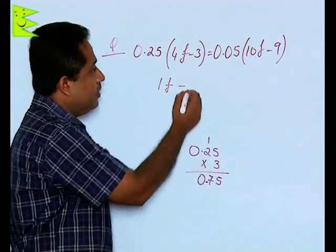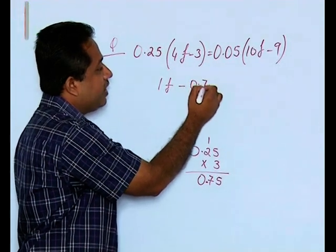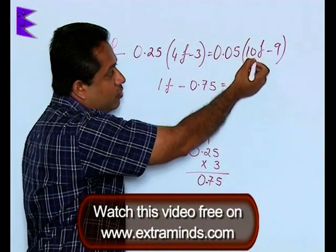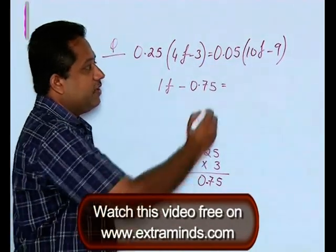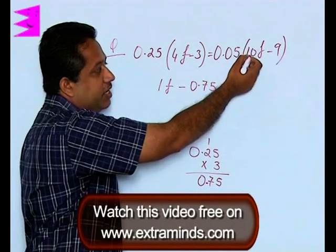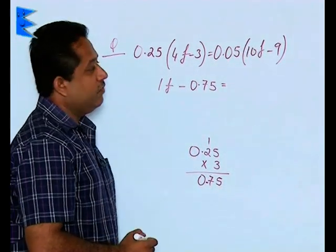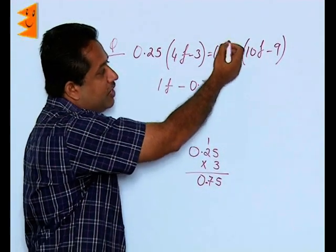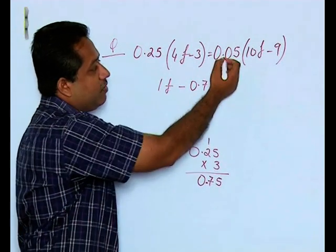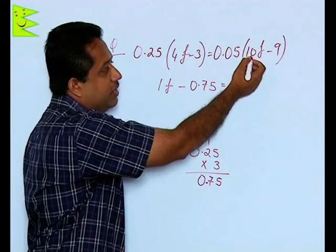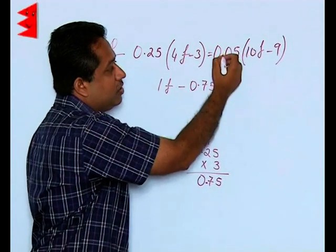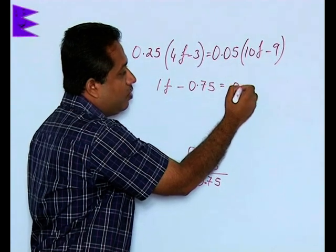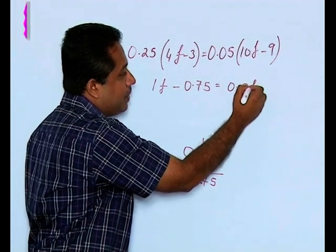This multiplication is easy because whenever we are dealing with multiplication with 10s, 100s, and 1000s, we do not have to actually multiply. We have to shift the decimal to the right side. When multiplied with 10, 0.05 into 10, you just shift the decimal one place to the right. This is going to be 0.5F minus...